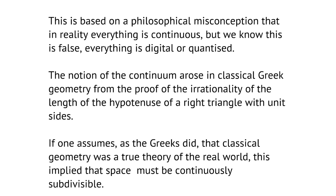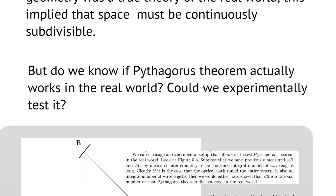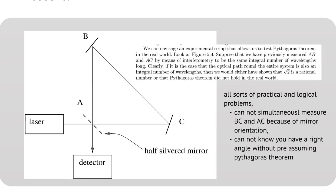The misconception is that in reality everything is continuous, but we know that this is in fact false. Everything is digital or quantised. The notion of the continuum arose in classical Greek geometry from the proof of the irrationality of the length of the hypotenuse of a right triangle with unit sides. If one assumes, as the Greeks did, that classical geometry was a true theory of the real world, this implied that space itself must be continuously subdivisible. But how do we know that Pythagoras' theorem actually works in the real world? Could we even experimentally test it?